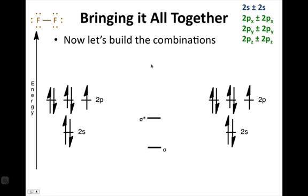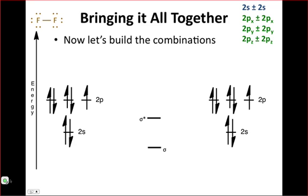Alright, now let's move on to actually building the combinations. So when we combine the 2s with the 2s, we can do so in either a constructive or destructive manner. If we do so in a constructive manner, we generate an orbital that just kind of looks like a blob between the two fluorine atoms.